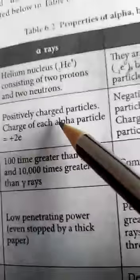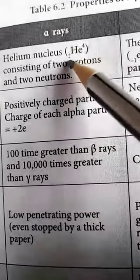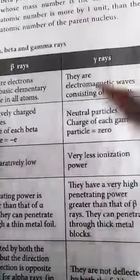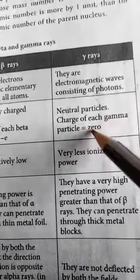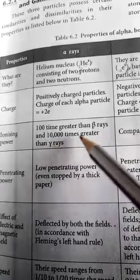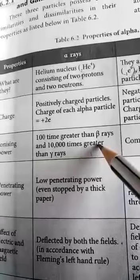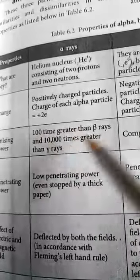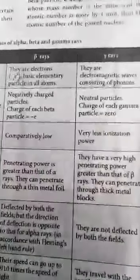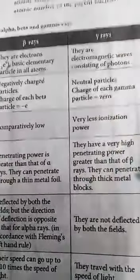Alpha rays are positively charged particles; the charge of each alpha particle is +2e. Beta rays are negatively charged; the charge of each beta particle is -e. Gamma rays are neutral particles with charge 0. Regarding ionizing power: alpha rays have ionizing power 100 times greater than beta rays and 10,000 times greater than gamma rays. Beta rays have comparatively low ionizing power, and gamma rays have very, very low ionizing power.